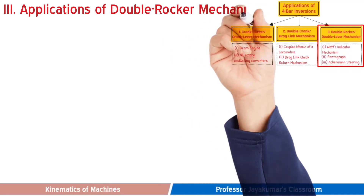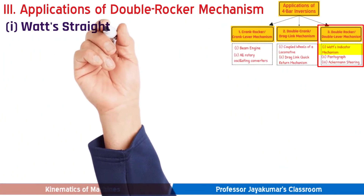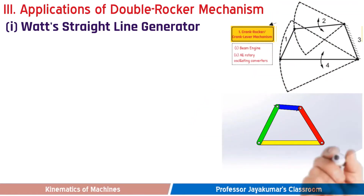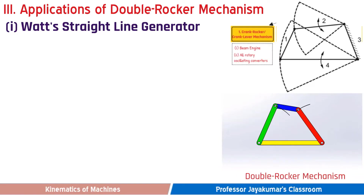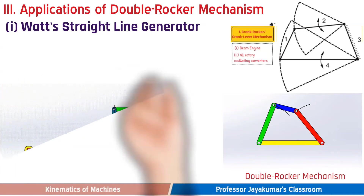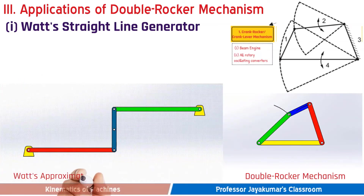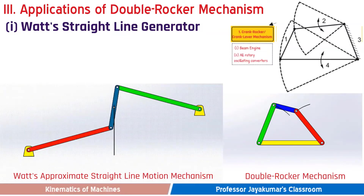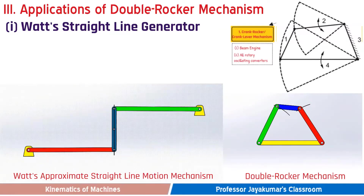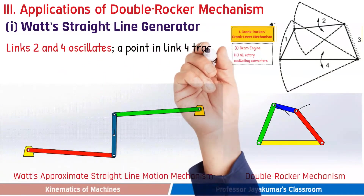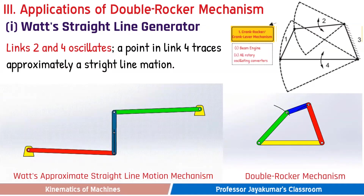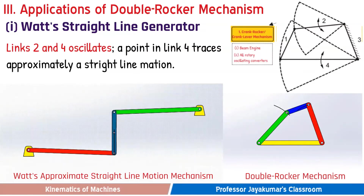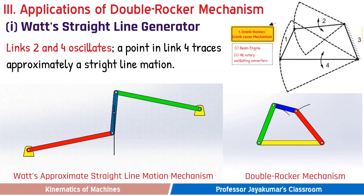Now we will present three applications of double rocker or double lever mechanism. The first one is Watt's straight line generator. The underlying concept is double rocker mechanism, where two links oscillate. As you can see in this animation, link 2 and link 4, colored in red and green, oscillate. A point in link 4 traces approximately a straight line. This mechanism was invented by James Watt for his steam engine to guide the piston rod along a straight line.